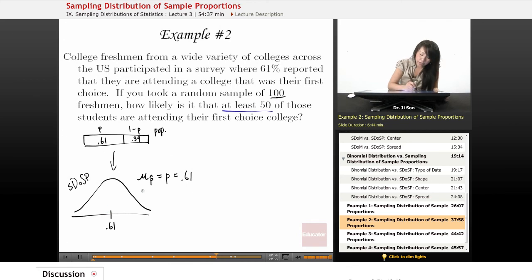Okay, and so I should probably find my S-DOSP's standard error, right? So we call it standard error because it's a sampling distribution. And so here it's the square root of P times 1 minus P over N, and that's going to be the square root of 0.61 times 0.39 divided by 100, right?